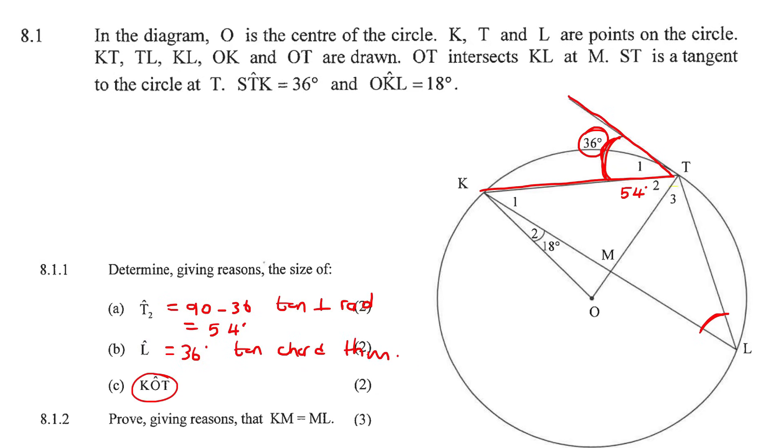This one says, what is angle KOT? Let's just put 36 over here, so KOT, so this angle over here. Well, if you look carefully, if you see which chord is making this angle, or if you had to drag your fingers backwards, you would get to K, and you would get to T.